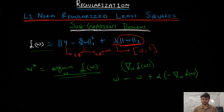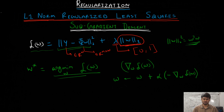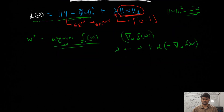We were able to do this because in linear regression we only had the squared loss term, and in the L2 norm regularized least squares we had the 2-norm of W squared, which equals W transpose W — both terms are differentiable with respect to W. In the L1 norm regularized least squares, however, this term is not differentiable. So instead of using gradients, we can use subgradients.